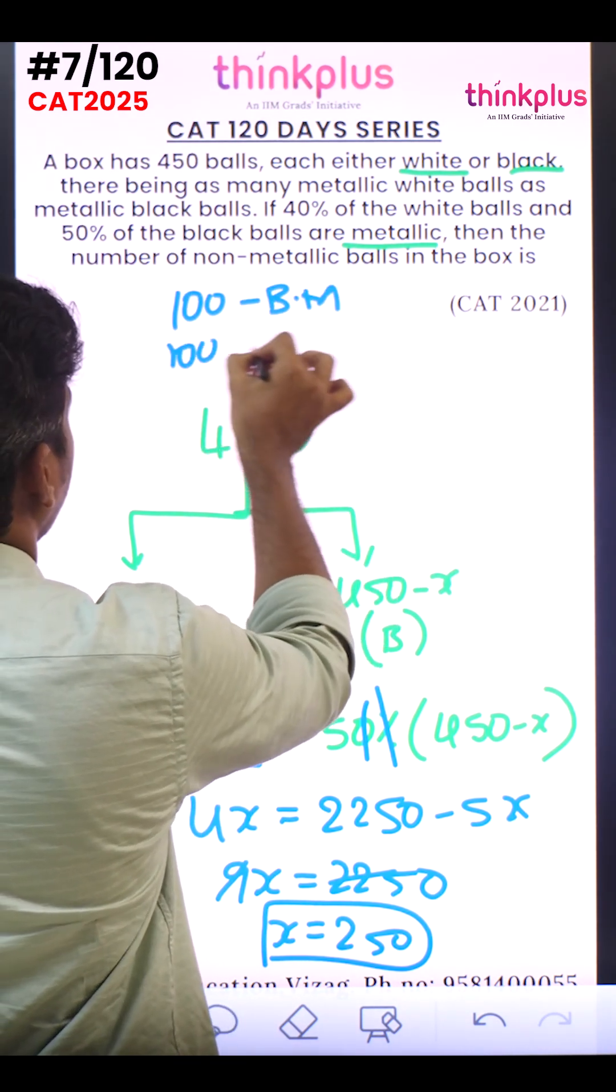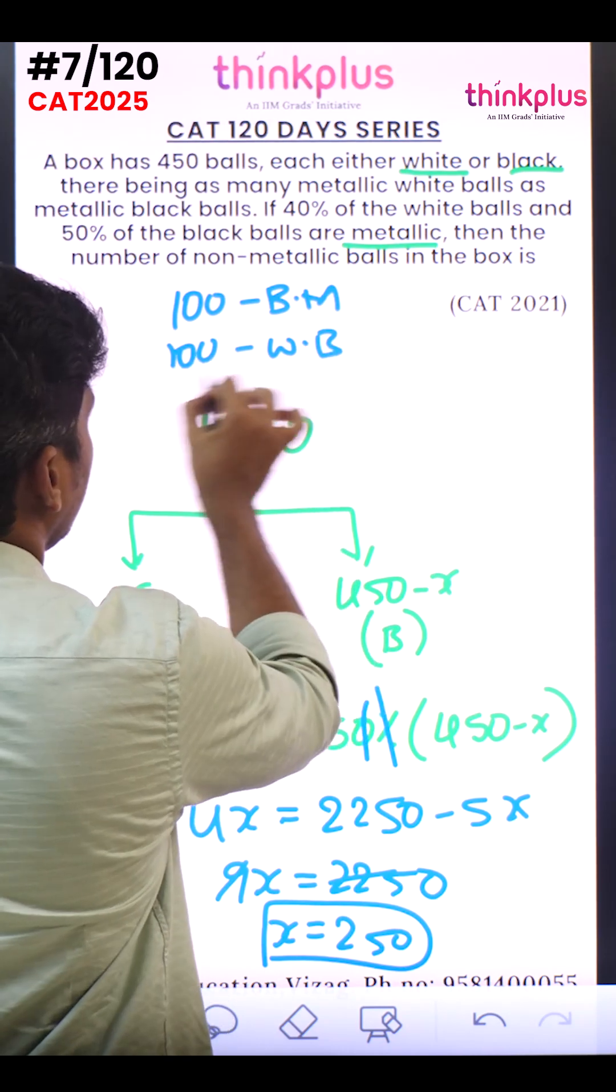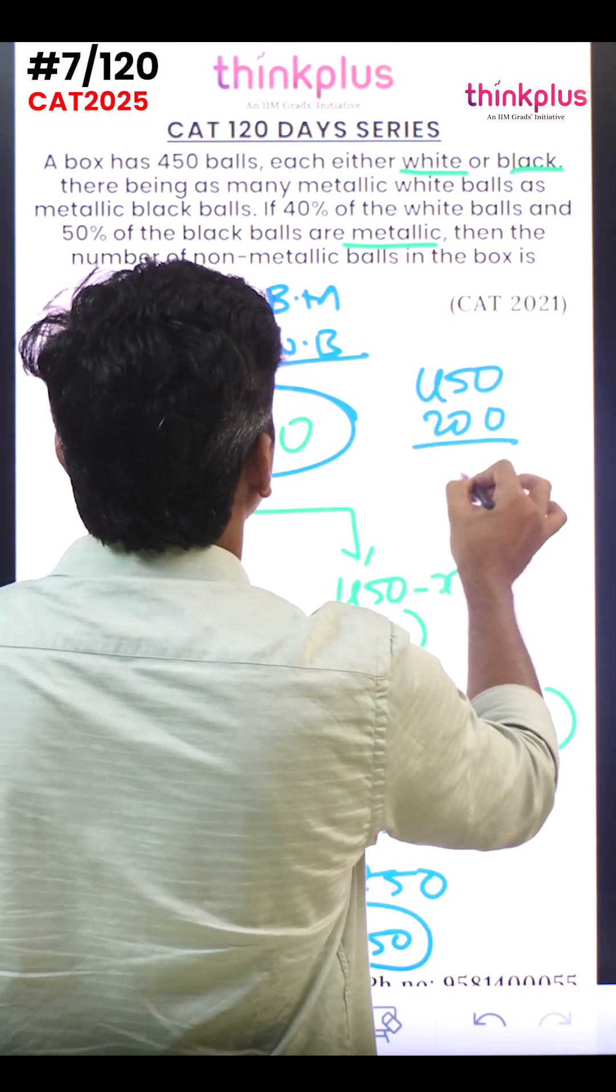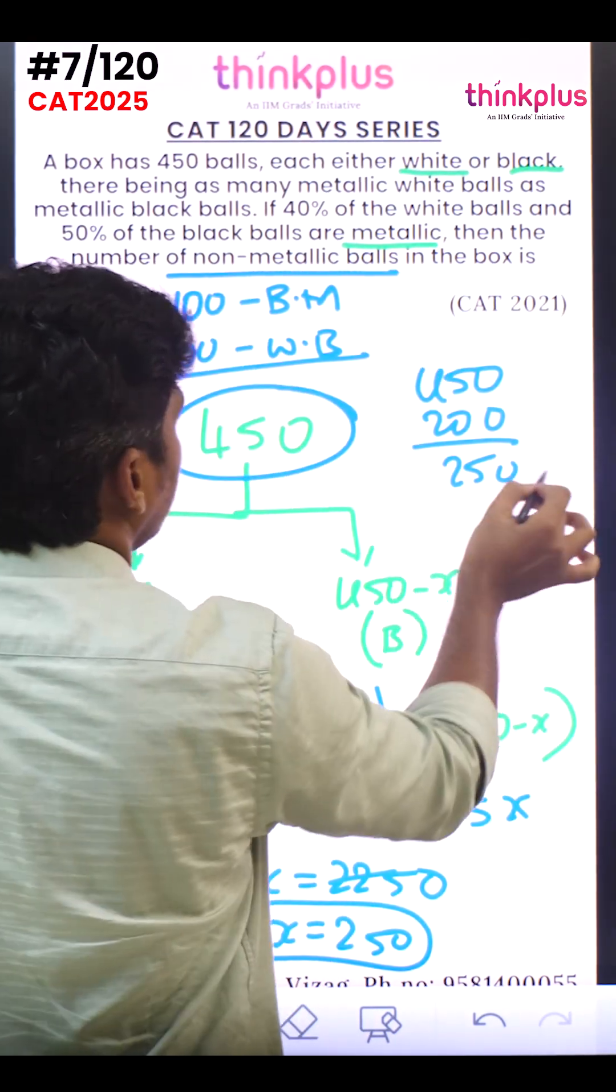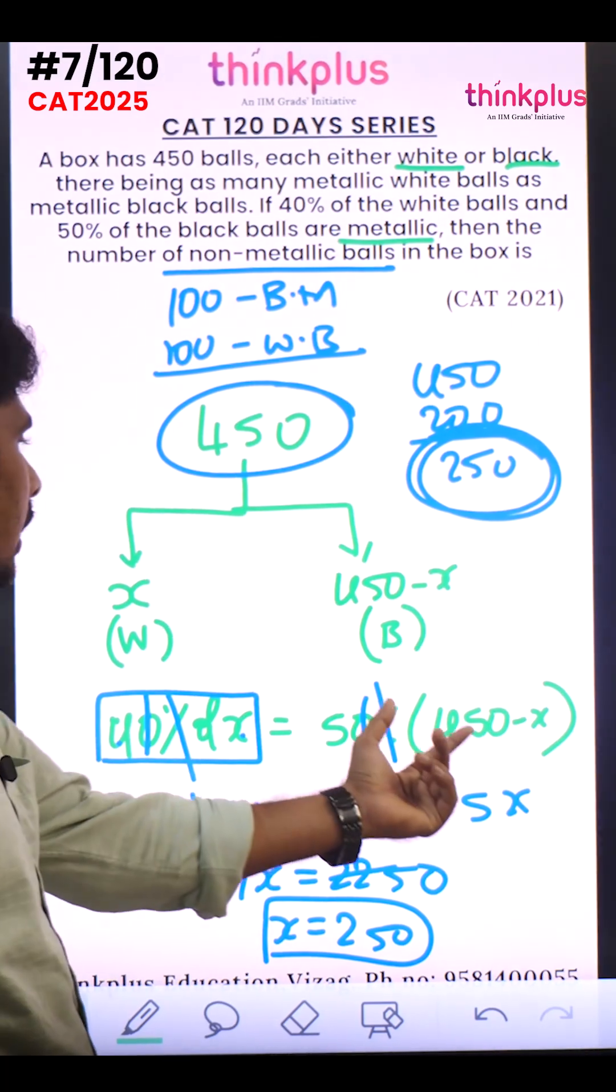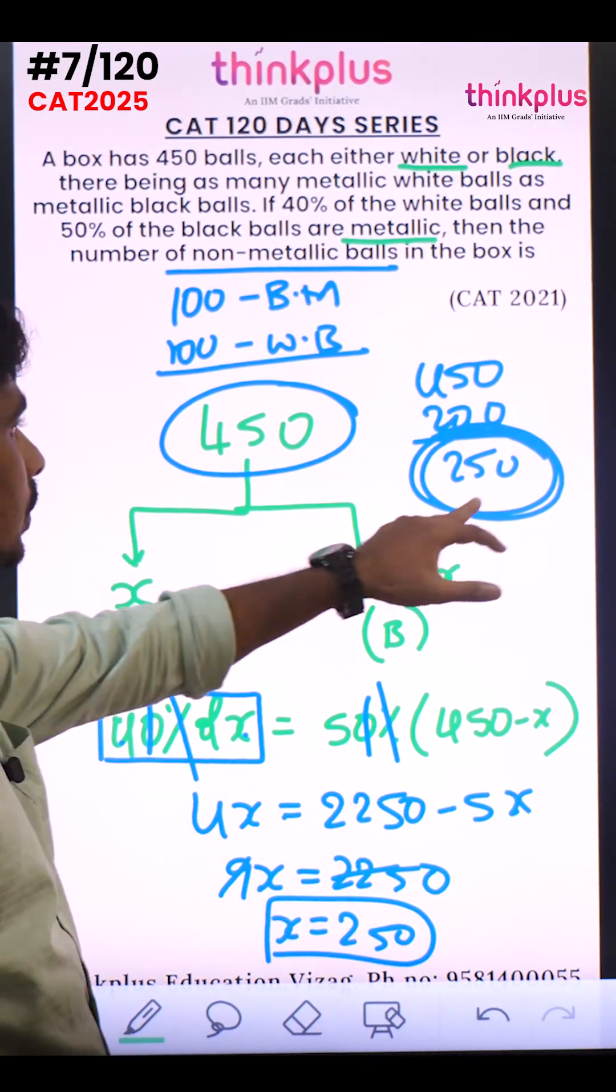Total 200 metallic balls out of 450. The remaining 250 are non-metallic. So the answer is 250.